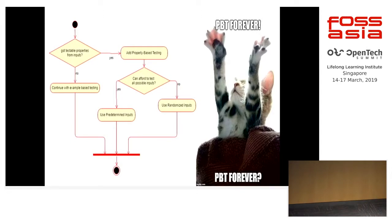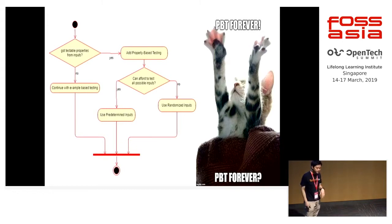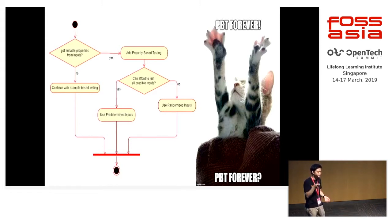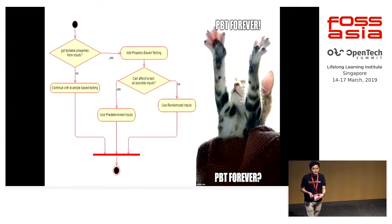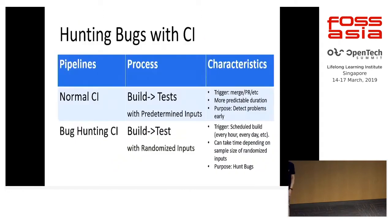Now that we have our randomized testing, I don't want to be manually triggering this. You want it to work while you're sleeping at night — something hunting bugs for you, so that when you wake up in the morning, if there are bugs, you get a report saying there's something wrong with your function. So you can set up a system that does the work for you at no cost. Hence, we have what I call bug-hunting with CI.